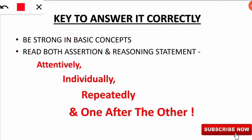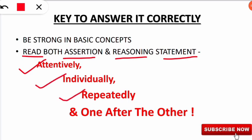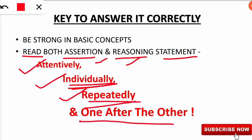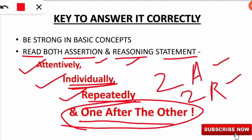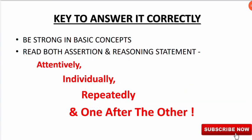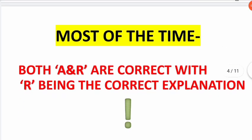Next, read both the assertion and reasoning statements attentively, individually, repeatedly, and one after the other. I suggest you read each statement a minimum of two times so you understand what is being said. Reading them one after the other is important — I will explain in the slides why we read them in that sequence.